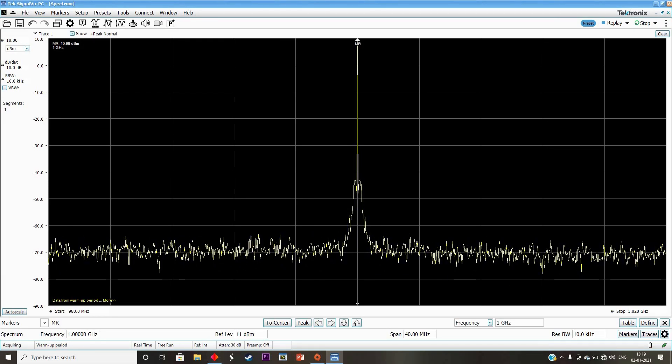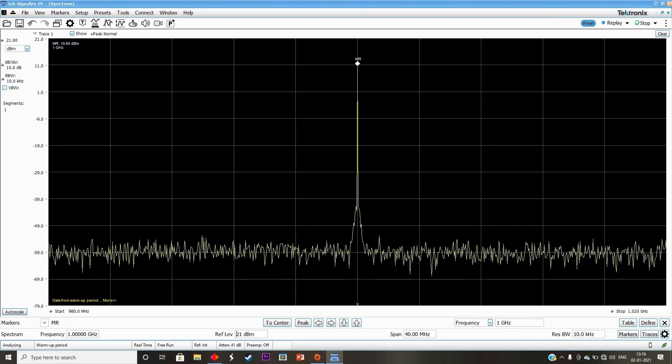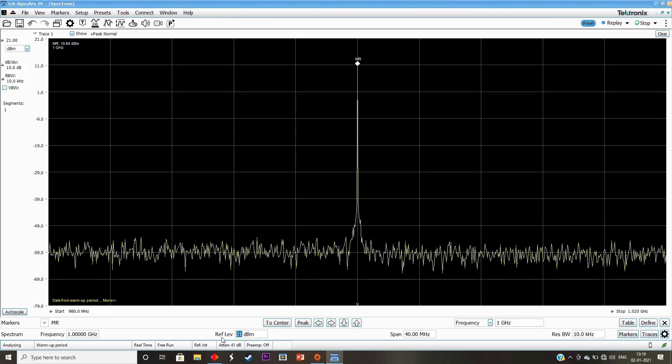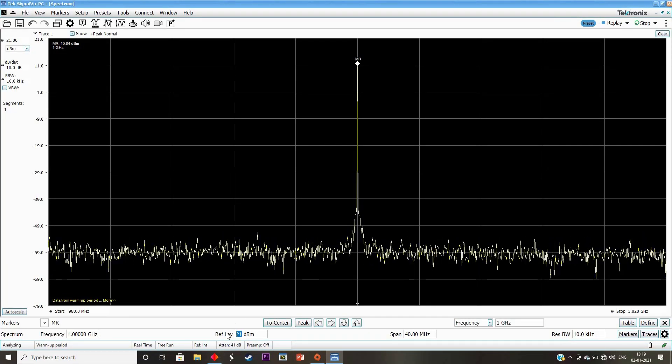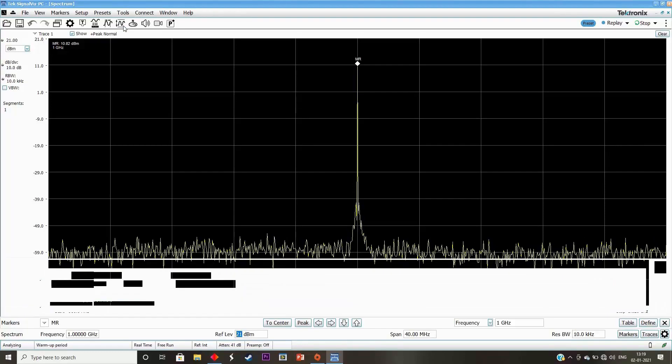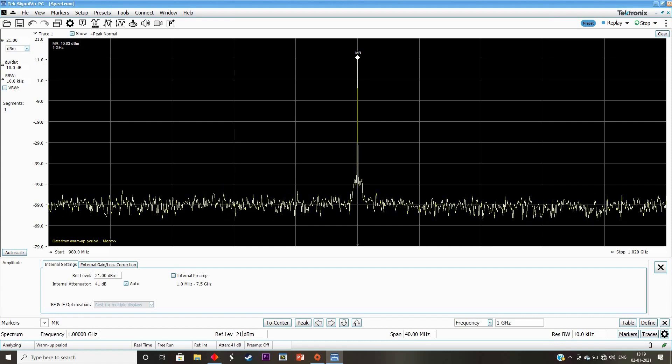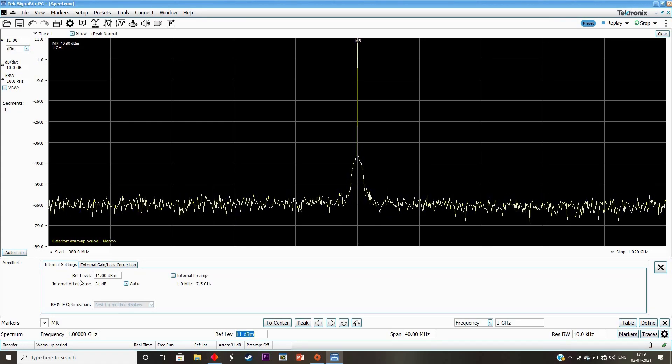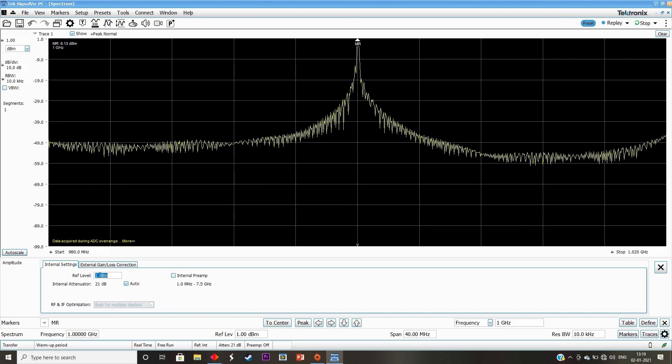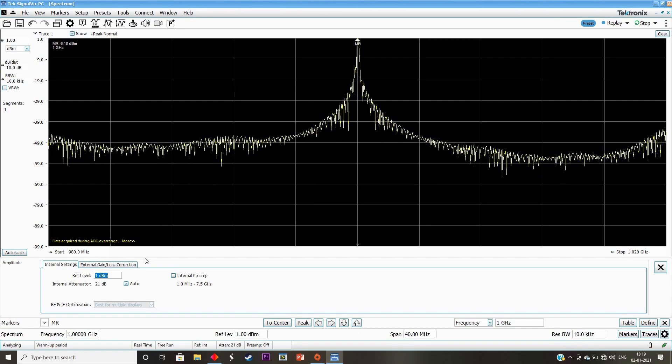Here I am changing the reference level. When we change the reference level, we can see the ADC overload error is not showing up now. Let us understand how the attenuator settings have been changed by changing the reference level. Here I open the amplitude control panel. If you see here, internal attenuator is linked to reference level. Let us change the reference level from 11 dBm now to 1 dBm. Notice that input attenuator also changed accordingly.